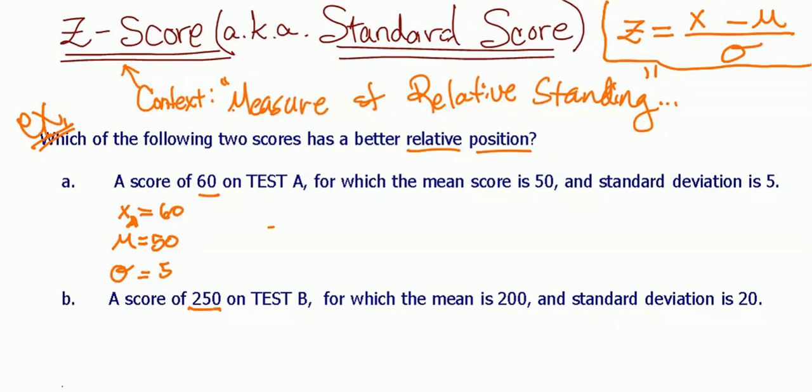Now, let's go ahead and get our z-score for A, so the z-score for test A. We're going to take our score, the raw score, 60, we're going to subtract the mean of 50, and then divide by 5, standard deviation.